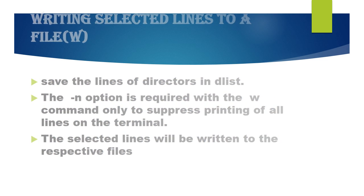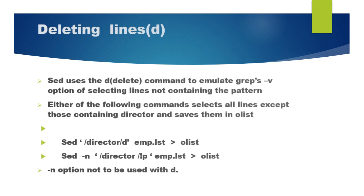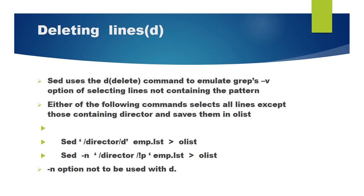Deleting lines. SED uses the D command delete to delete lines from a file. Either of the following commands selects all lines except those containing director and shares them in a list.